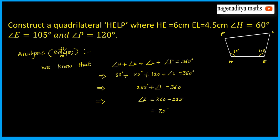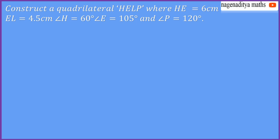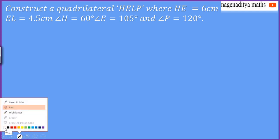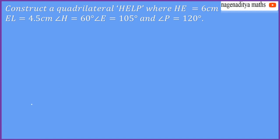So, we got the angle L. Angle L is equal to 75 degrees. We already did some analysis to construct this particular construction. Based on that analysis, angle L is equal to 75 degrees. Before going to construct the given quadrilateral, first we have to draw a rough diagram.